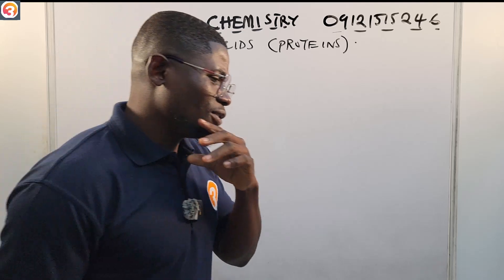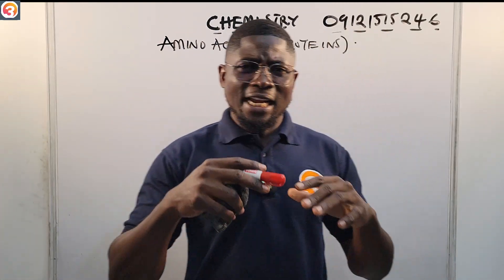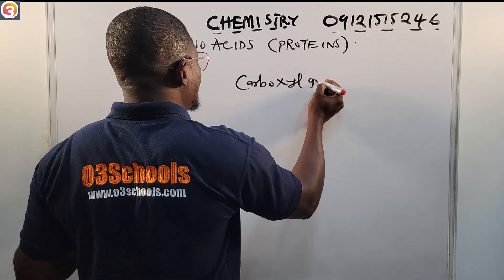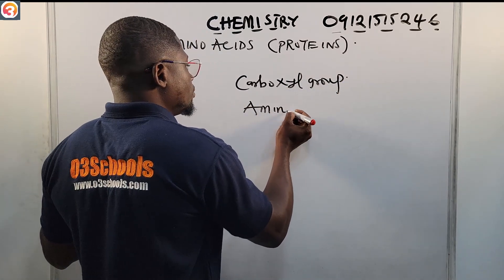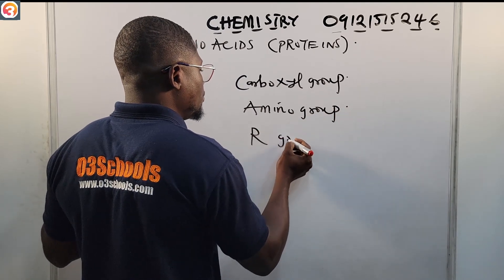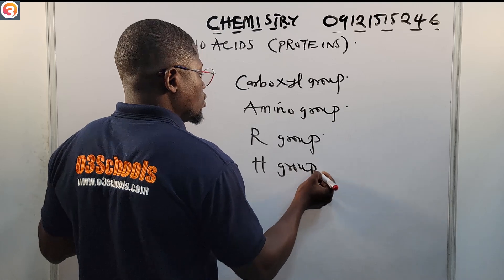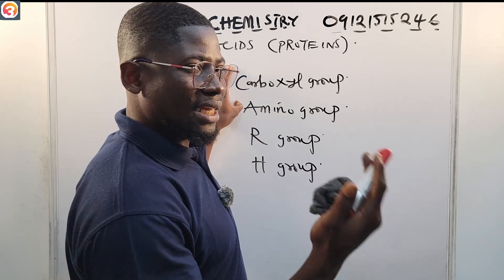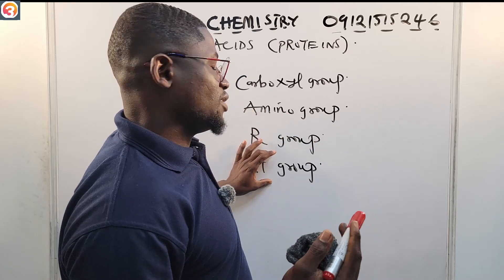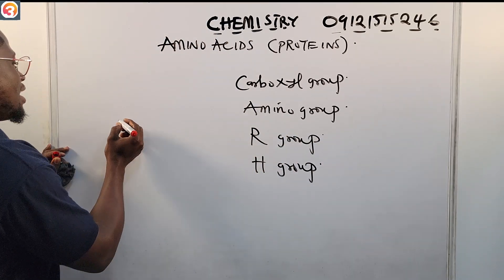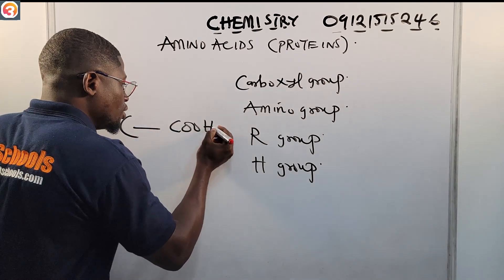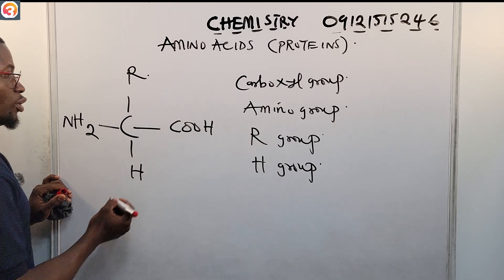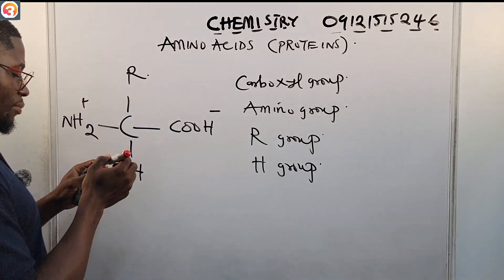An amino acid has a carboxylic acid group, an amino group, an R group, and an H group. Generally they are represented with a central carbon bonded to a carboxylic acid group, an R group, an amino group, and a hydrogen group — showing a negative and positive charge on the molecule.